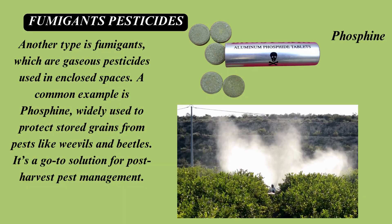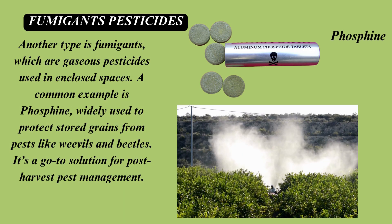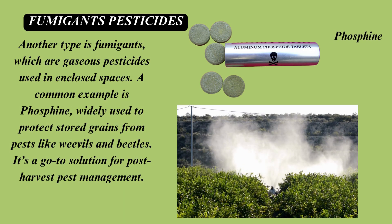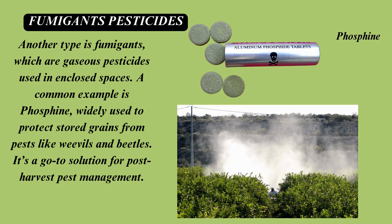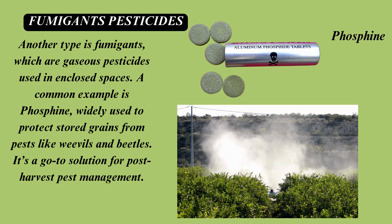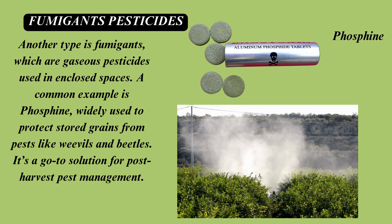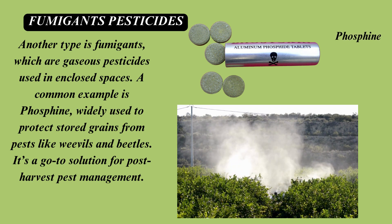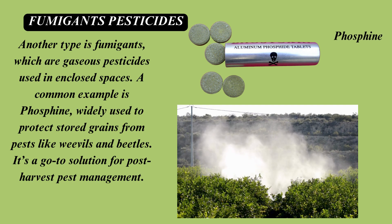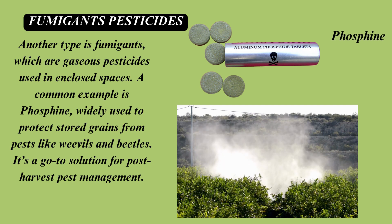Another type is fumigants, which are gaseous pesticides used in enclosed spaces. A common example is phosphine, widely used to protect stored grains from pests like weevils and beetles. It's a go-to solution for post-harvest pest management.